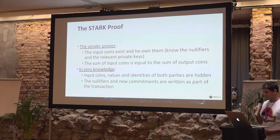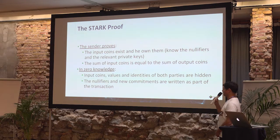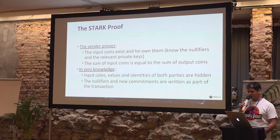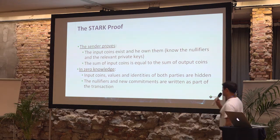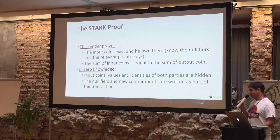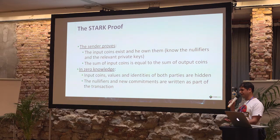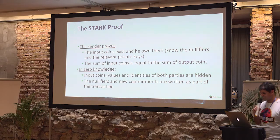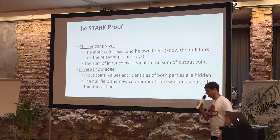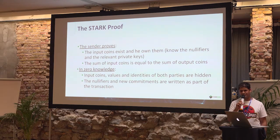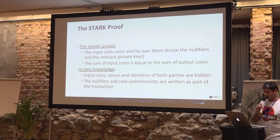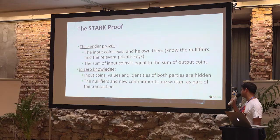What does the sender need to prove? He needs to prove that the input coins — the commitments he is spending — exist, and that he owns them, meaning he knows the private key related to them. He also knows the nullifiers related to them. He also needs to prove that the sum of the inputs and the outputs is equal — that he is not creating or destroying value. And this is done in zero knowledge, so no data is revealed on the input coins — not the values, not the public keys — everything remains secret.